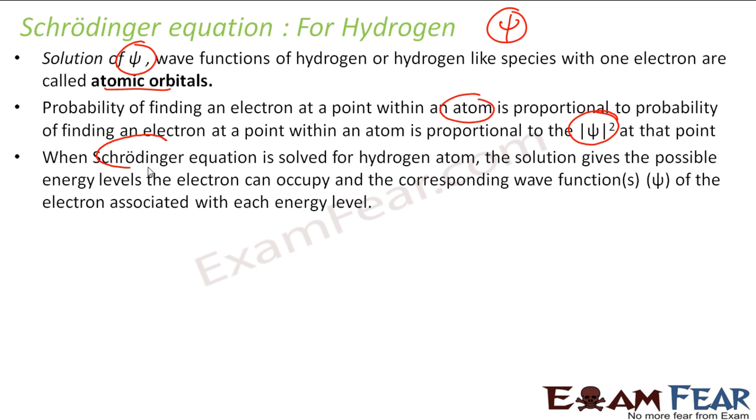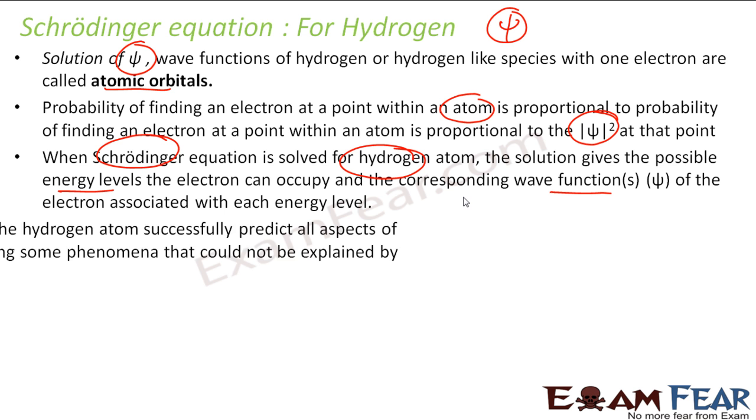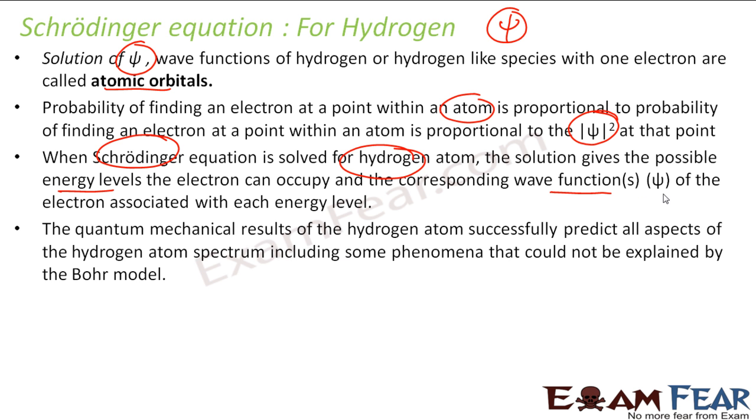And when this Schrödinger equation is solved for hydrogen atom, the solution gives the possible energy levels the electron can occupy and the wave function for that energy level. The wave function you know is nothing but the orbitals.